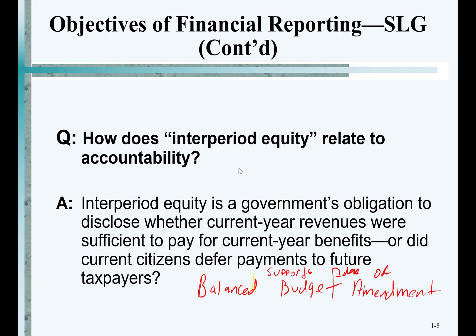We have the concept of inter-period equity, which says we should not budget to spend more in any one period than we have revenue coming in. That means living within our means year to year. The federal government, however, spends more money than it takes in every year. The deficit is the amount by which spending exceeds revenue in any one year.